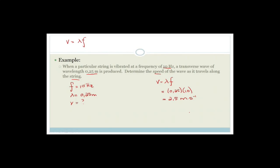The speed is 2.5 metres per second. In Grade 10, please don't write 'metres per second to the minus 1' — that would actually mean metres times seconds, which is wrong. If you write 'metres per second to the minus 1,' that's incorrect. It is metres per second, full stop. Please be careful about that.